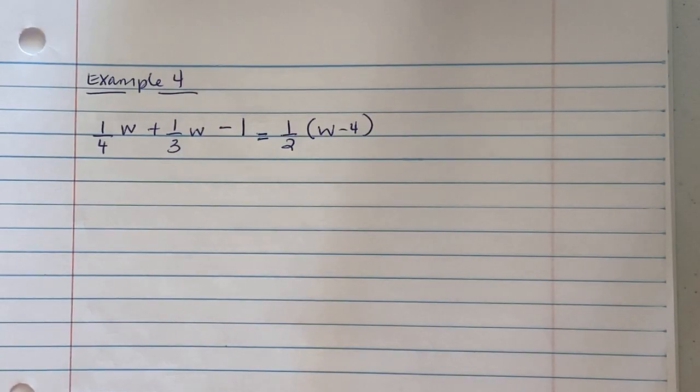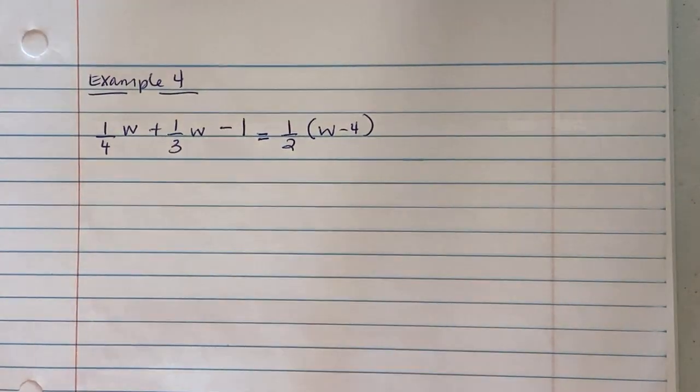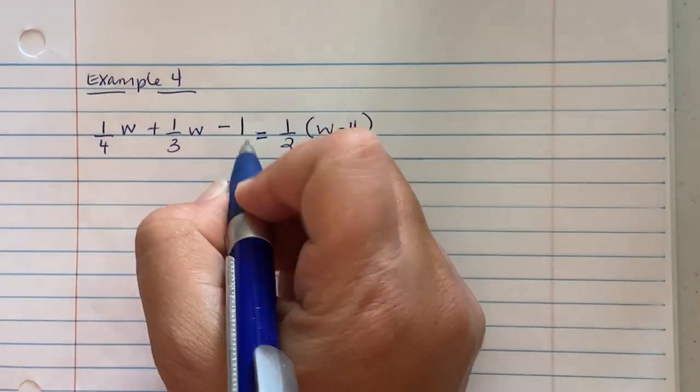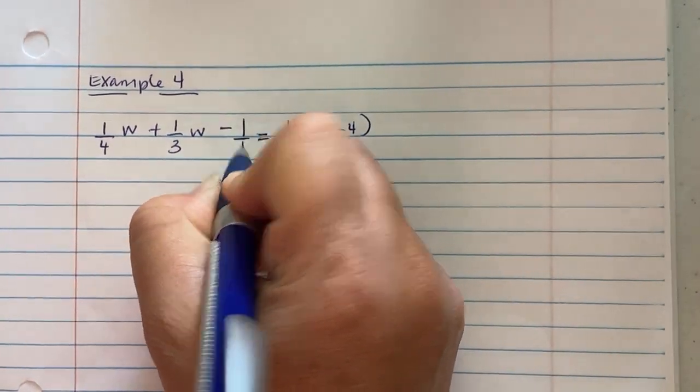Example 4. So now we're looking at this problem and it has 1/4 w plus 1/3 w minus 1 equaling 1/2 parentheses w minus 4. First thing I notice I have a fraction, fraction, whole number, fraction. I'm going to make that whole number an improper fraction by just putting it over 1.